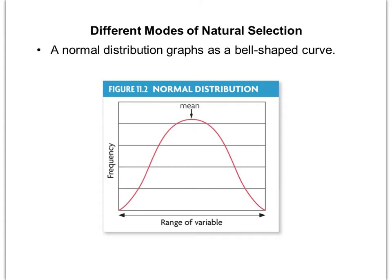Next we'll look at different modes of natural selection, which requires understanding the bell-shaped curve called a normal distribution. This measures the frequency of individuals in a population versus the range of a variable. For example, if we lined up an entire class by height, the average height would have the highest number of students, and as we go to the extremes — taller or shorter — there are fewer numbers. Most data follows a normal distribution; the same applies to grades in a class.